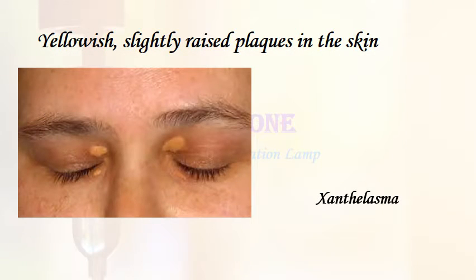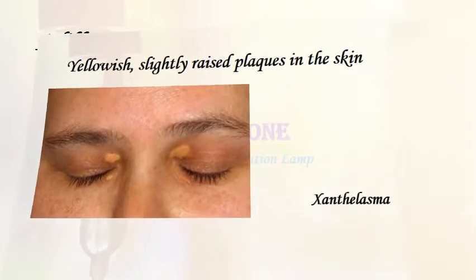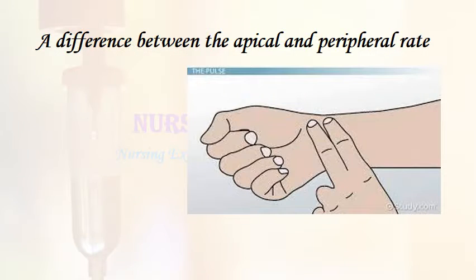Yellowish slightly raised plaques on the skin: xanthelasma. A difference between the apical and peripheral rate: pulse deficit.